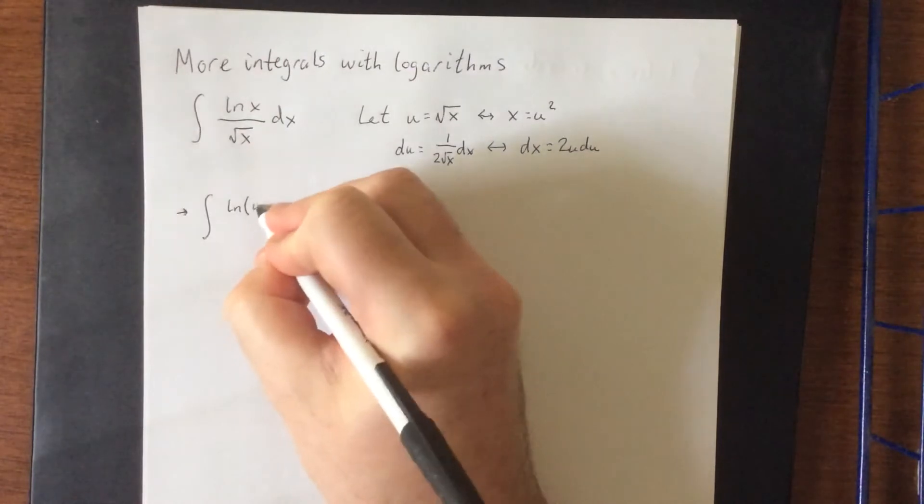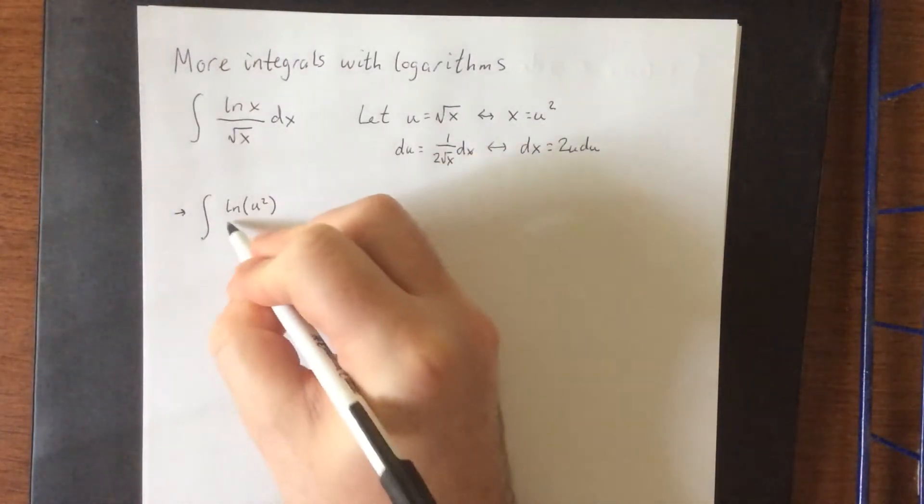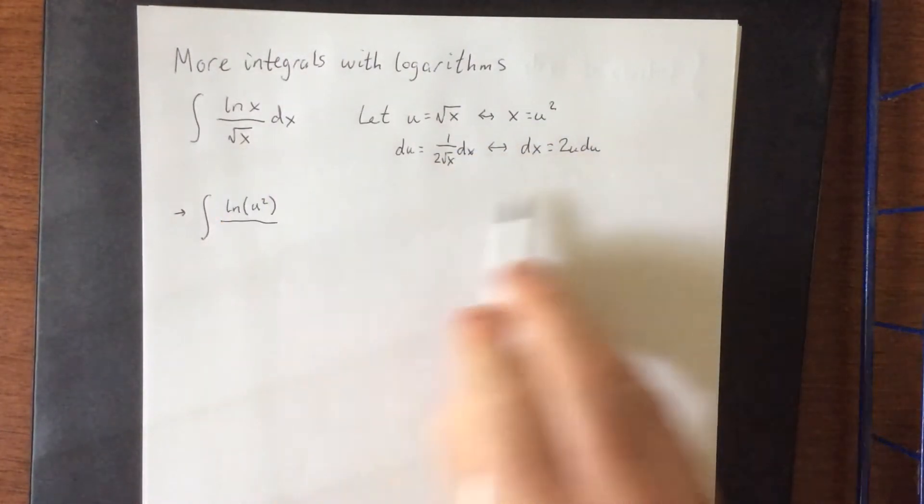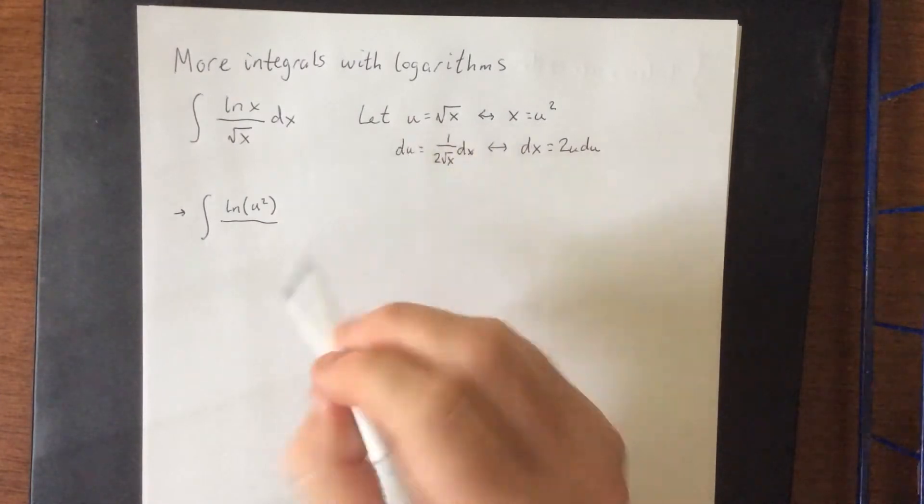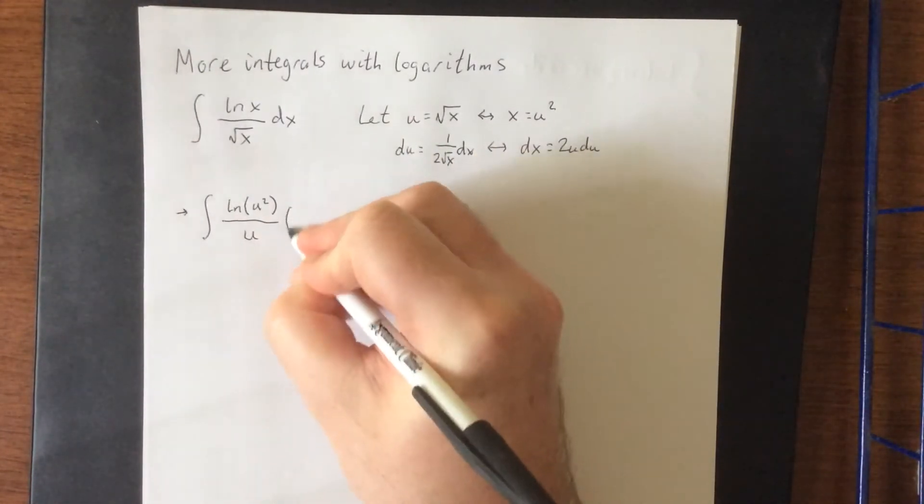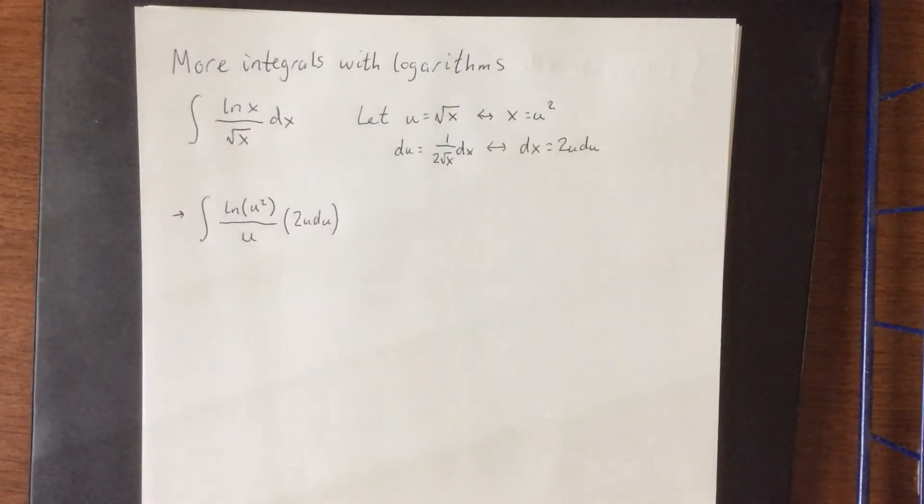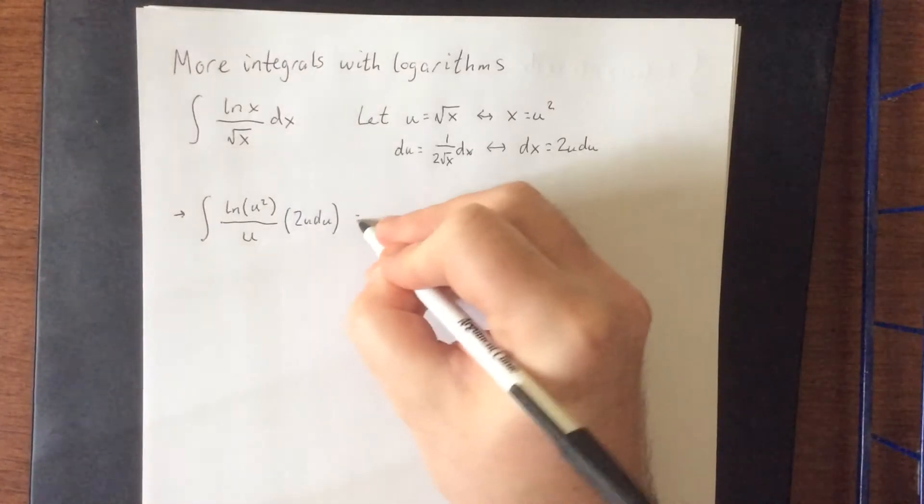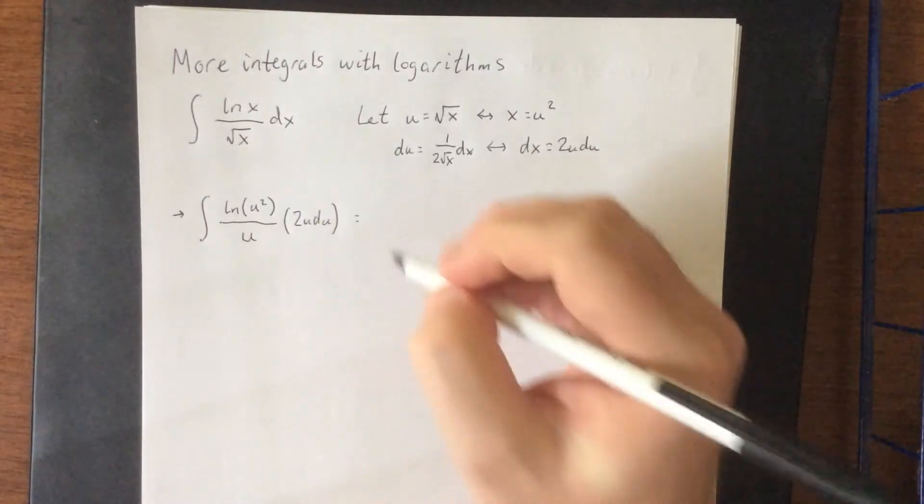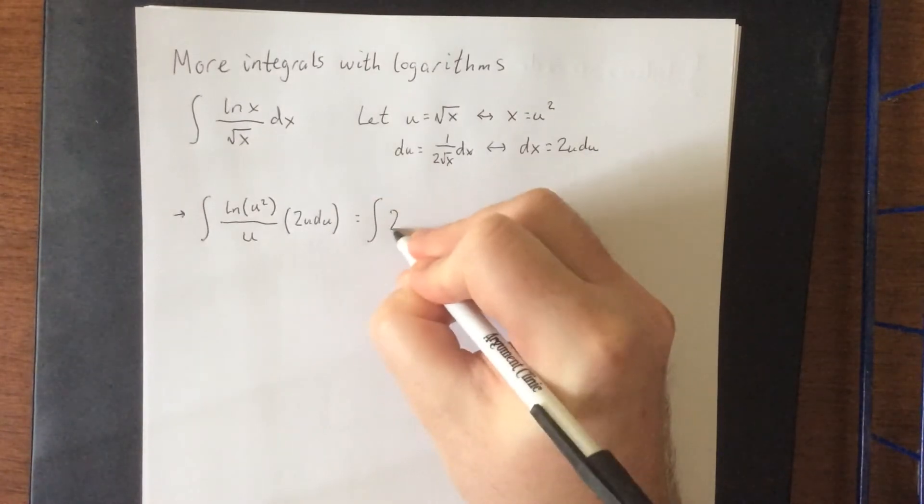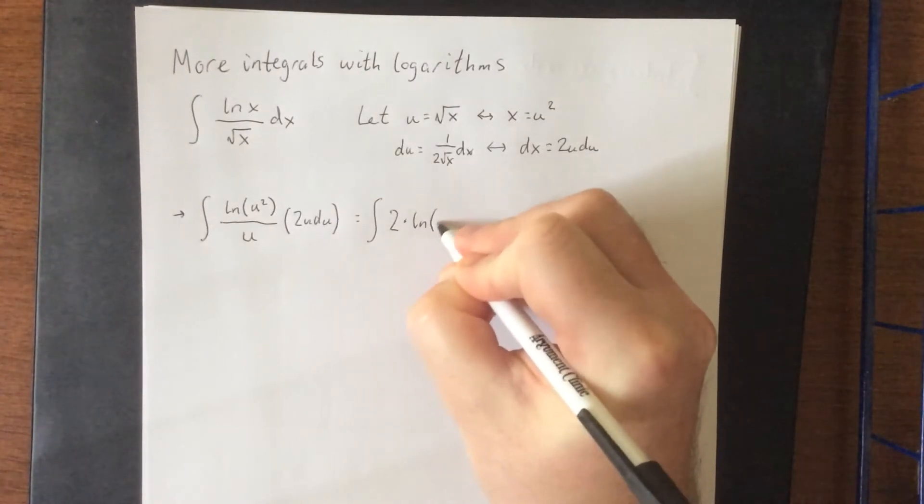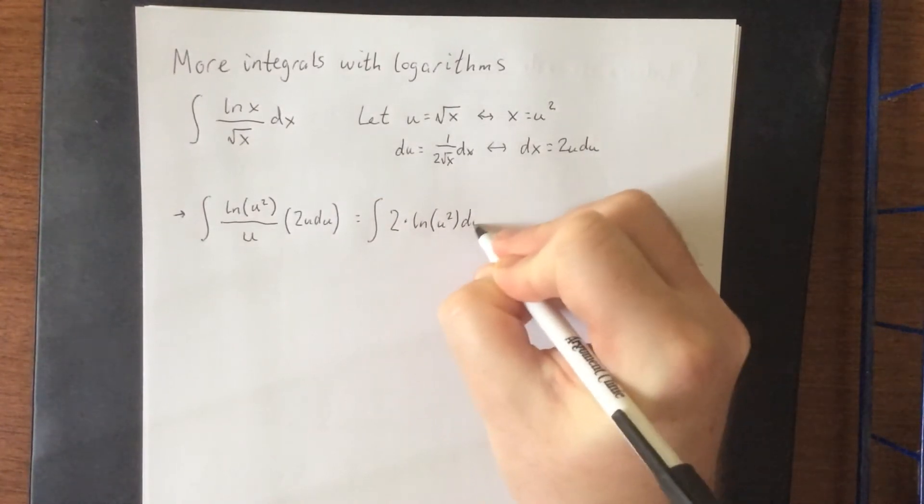We're going to wind up with the integral of the natural log instead of x. That'll now be at u squared divided by square root of x. Square root of x we said is equal to u. And then dx would be equal to 2u times du. So with that in mind, we do have some algebra that we can do with this. The algebra that can be done, we can cancel a u with a u. And be left with 2 times the natural log of u squared du.